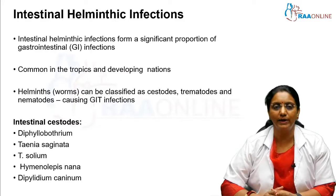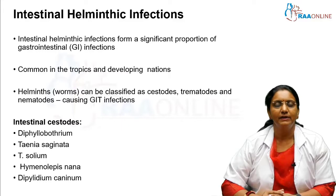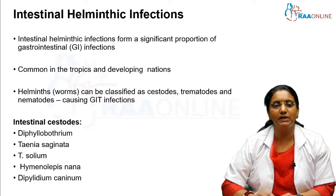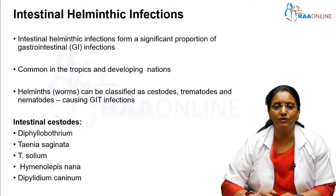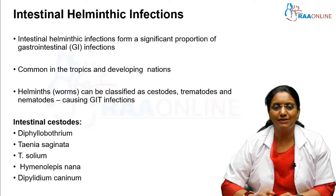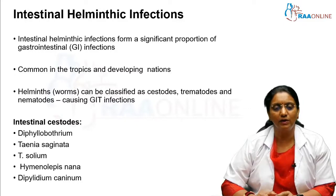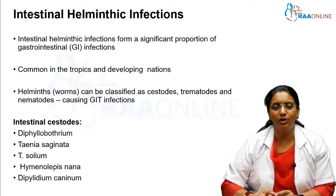Worm infestations are quite common in the tropics as well as in developing nations. The helminths or worms can be classified as cestodes, trematodes, and nematodes — not only causing GIT infections but also causing other systemic infections. Cestodes are flat worms; they are segmented and dorsal-ventrally flattened, and because they are segmented the body looks like a tape — that is why they are known as tapeworms.